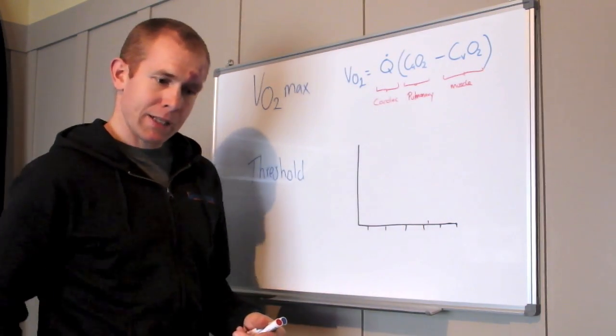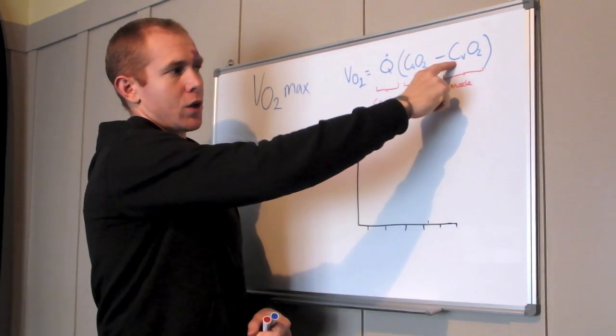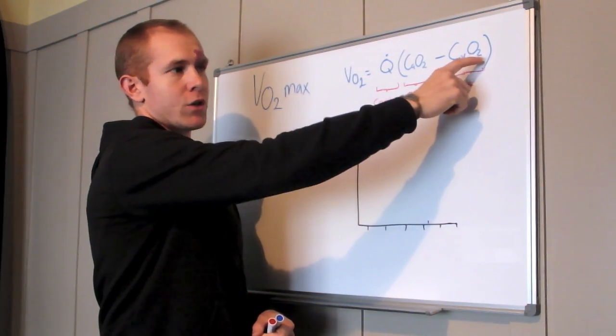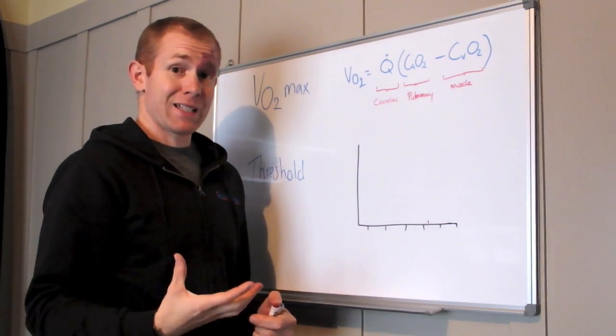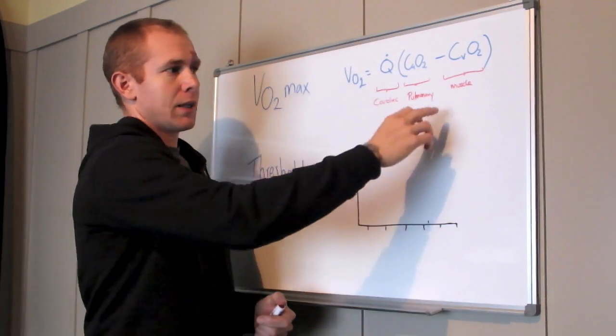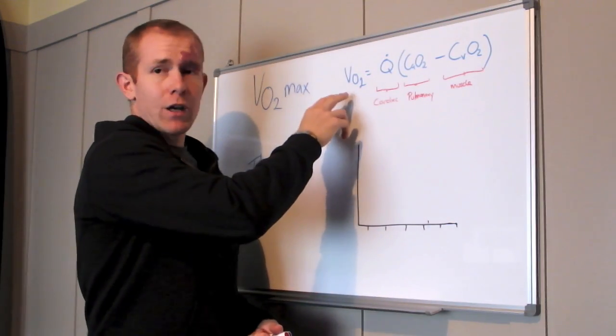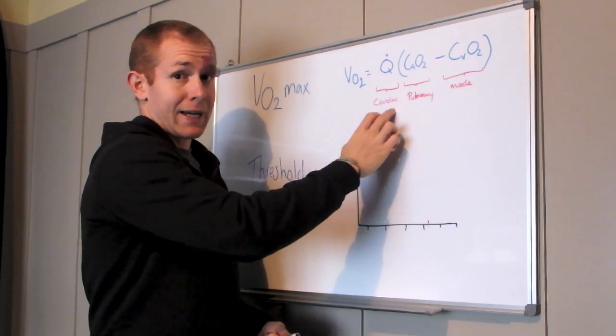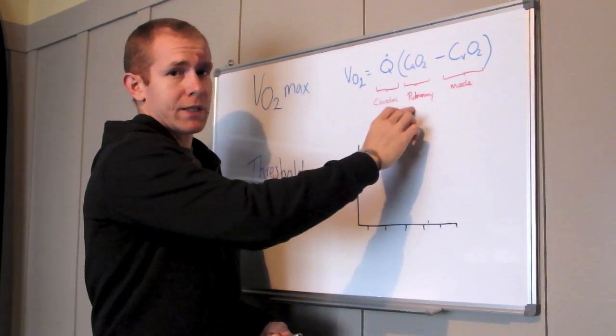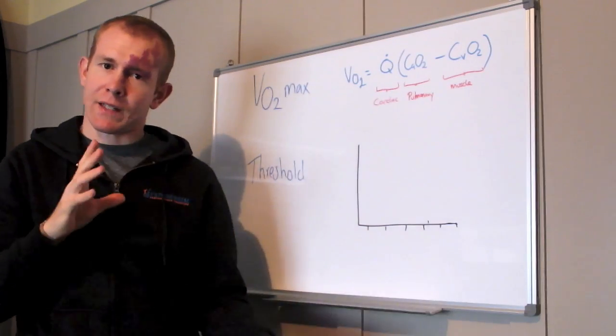And then once that blood goes to our muscle comes out the other side, we're interested in the concentration of venous O2, so how much oxygen is in our veins after it's been through the muscle. So that relates to muscle factors. So VO2 takes into account what's happening with your cardiac system, your pulmonary system, so your lungs, and then how efficient your muscles are at extracting the oxygen.